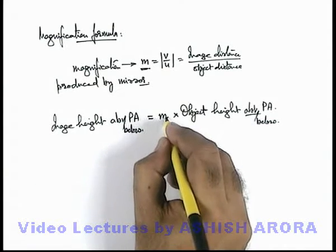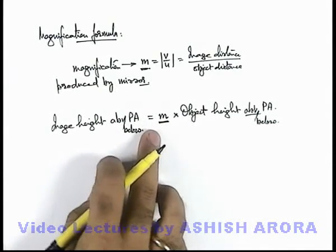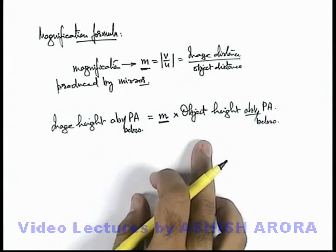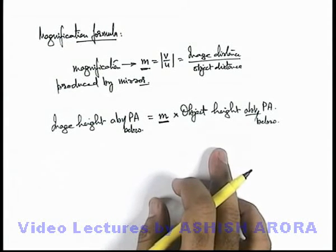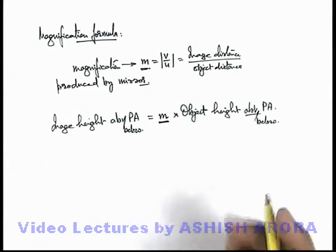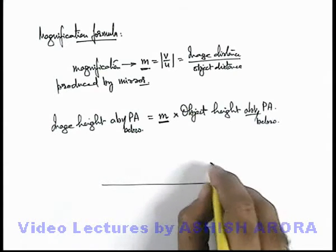So m is giving us the idea about how many times the image is magnified. This is the way how magnification formula is used. Like for an example, say if we are given with a concave mirror.